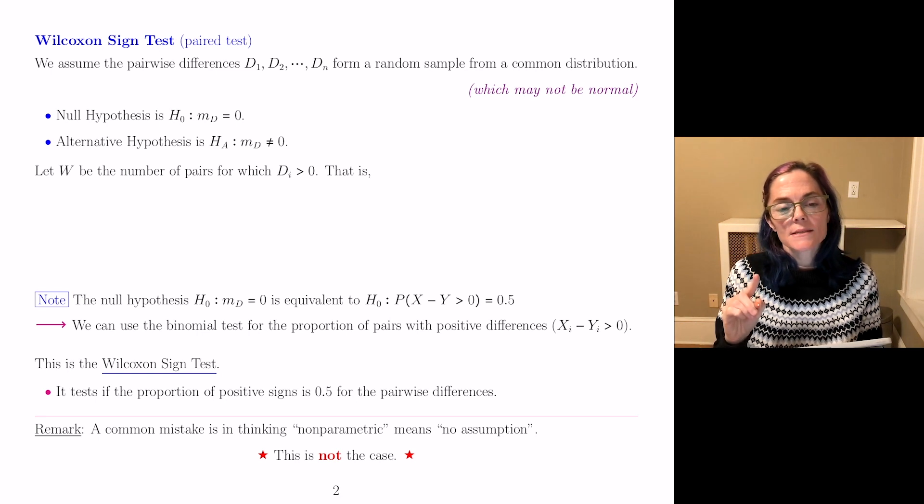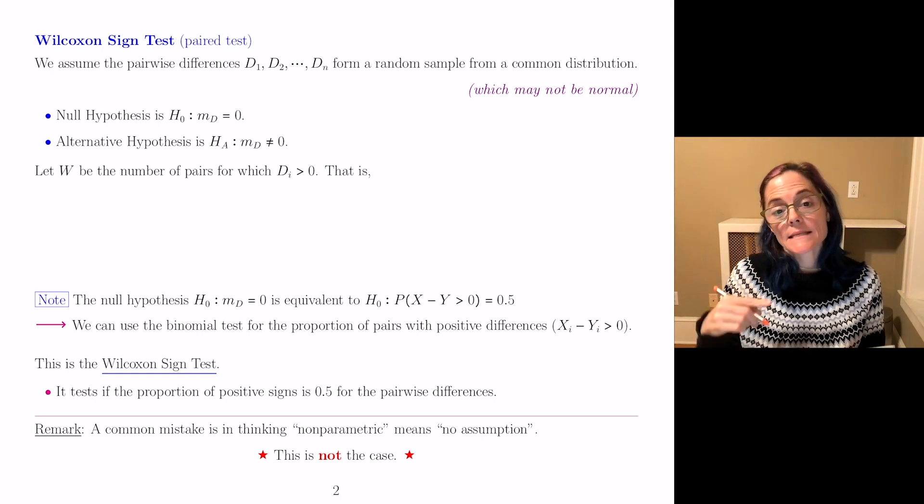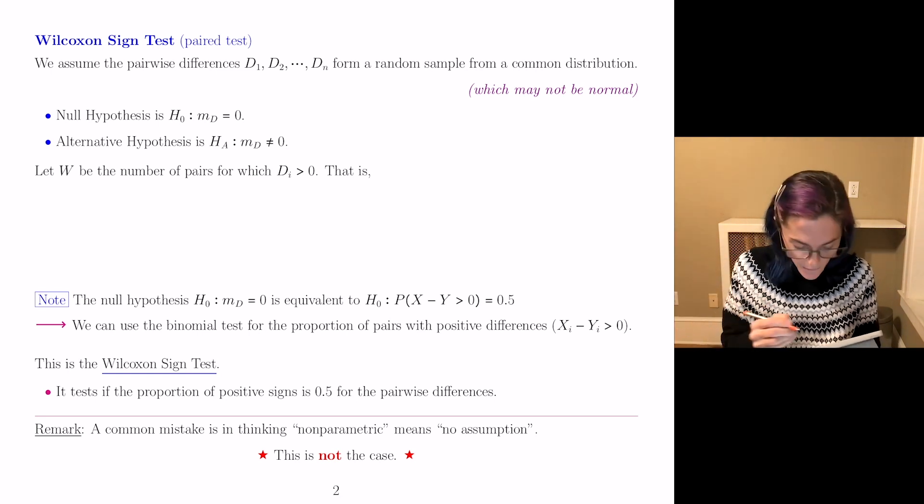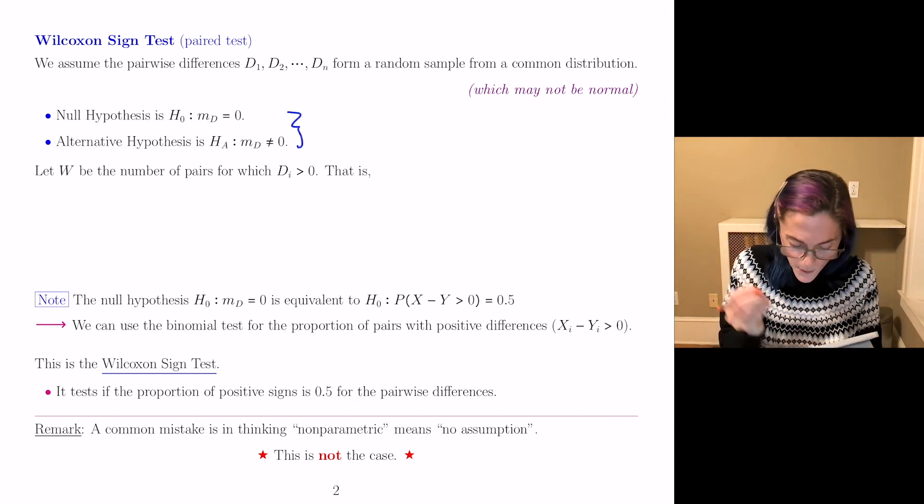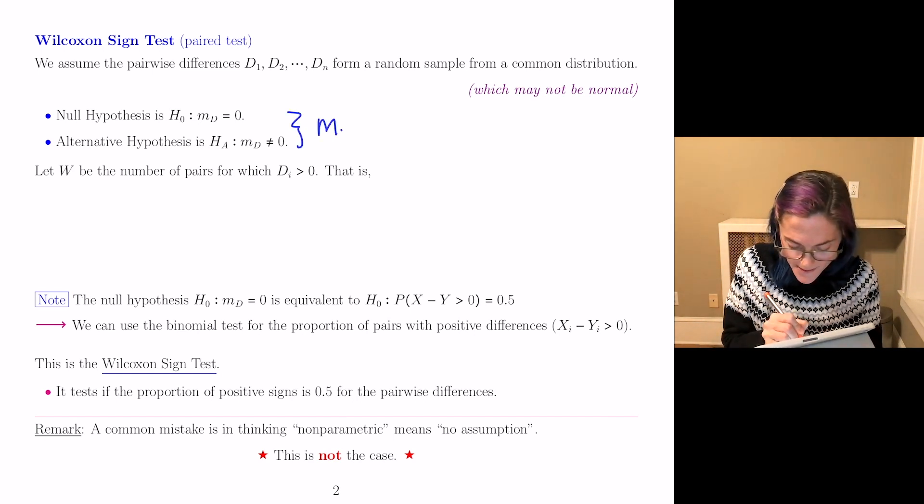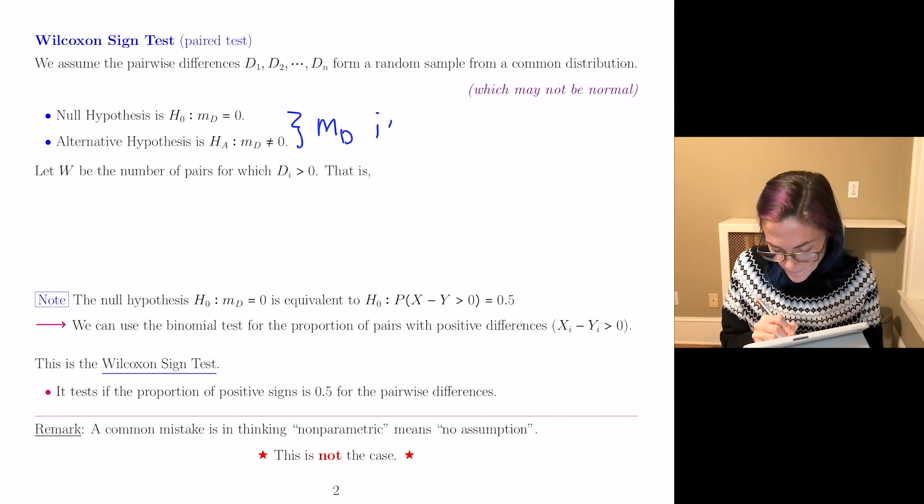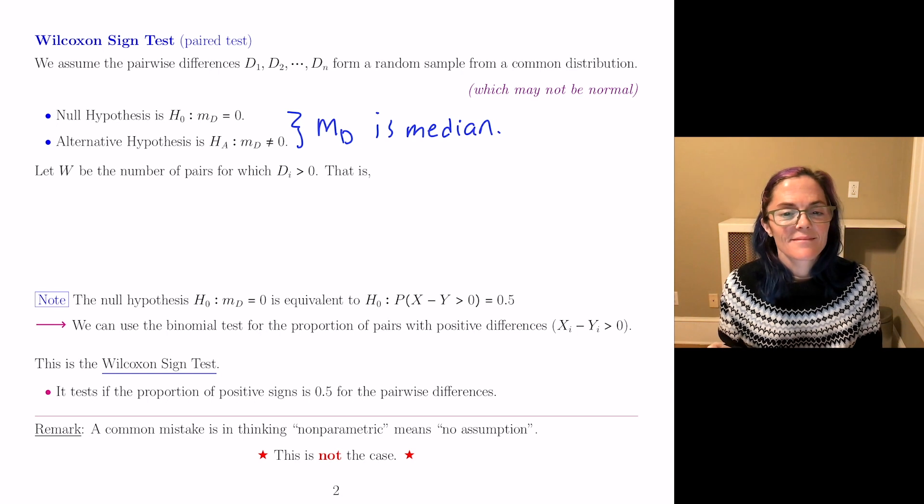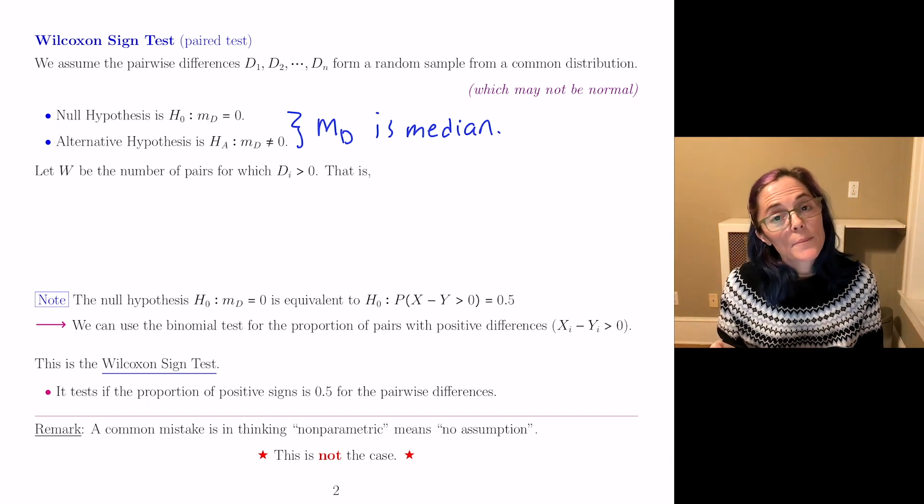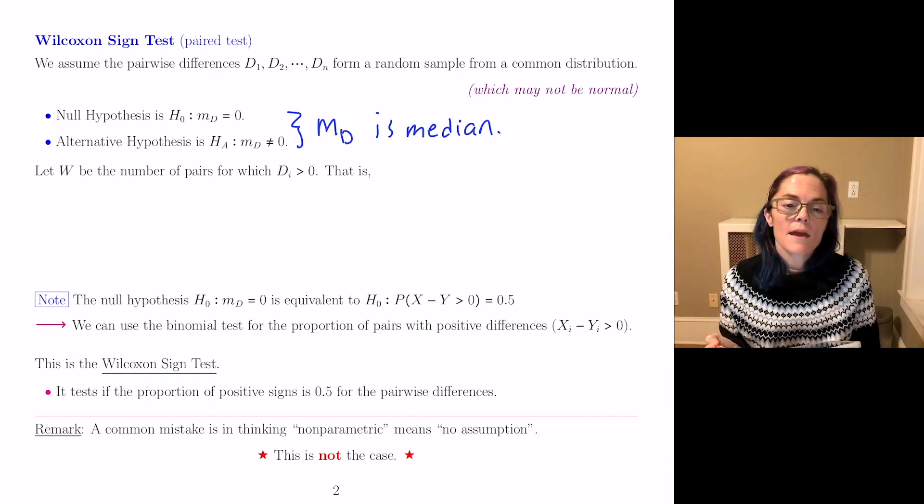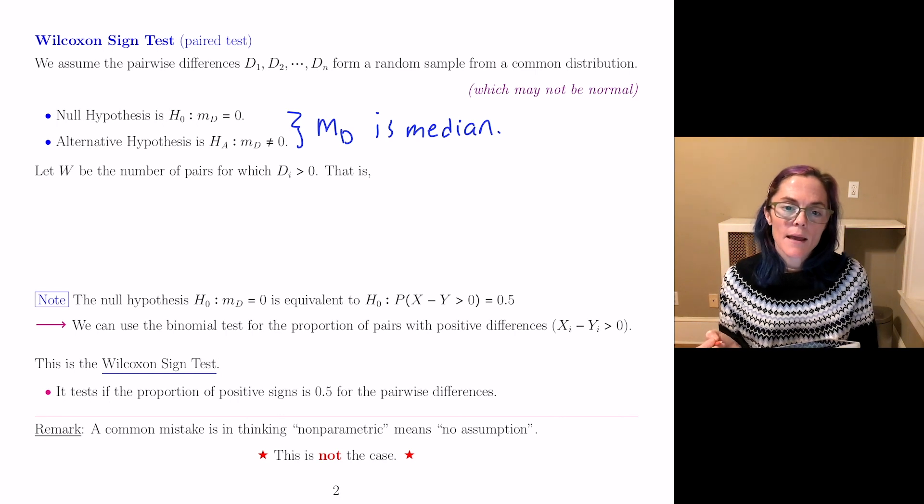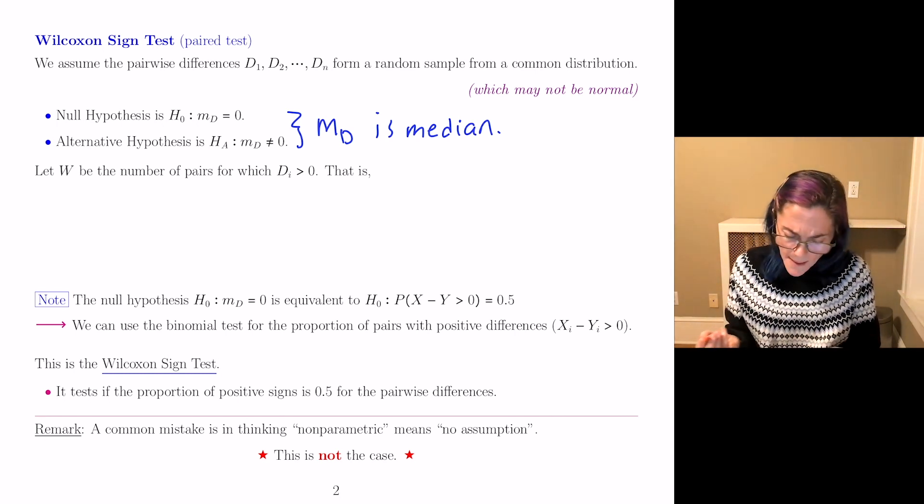The alternative hypothesis, at least for the two-sided case, is that Md is not equal to zero. And this is an important note here. Md, this is the median.